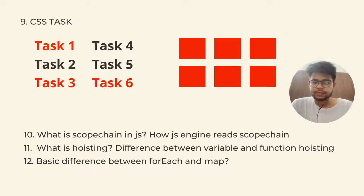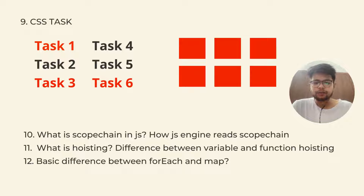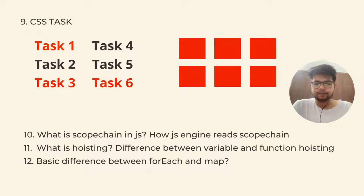The ninth question involved CSS tasks - there were actually three of them given by the interviewer. If you look at the left-hand side corner there is Task 1, Task 2 and Task 3. Task 1: there can be n number of items, and for every odd item you have to color it red, and for every even item it should be colored black. How will you achieve that using CSS?